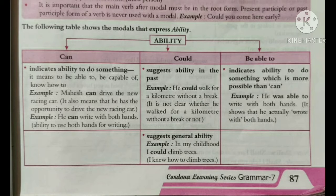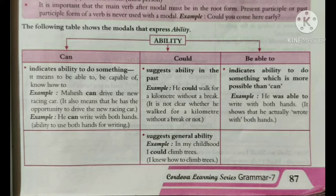First of all, we will see the modals that express ability. The words that express ability are can, could, and be able to. The word 'can', when used as a modal, indicates the ability of a person to do something — it means to be able to, to be capable of, to know how to. For example: 'He can drive the new racing car' and 'He can write with both hands.' These sentences tell us about a person's ability.